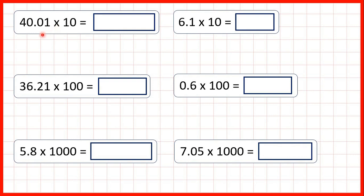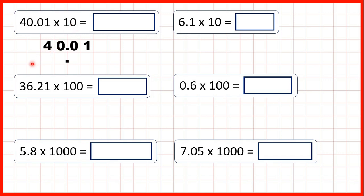Now we need to multiply decimals by 10, 100 or 1000 and to do that we always start in the same way. We write out our decimal, so here we have 40.01, and then we copy down the decimal point so that it's directly below the decimal point in our number. Now when we multiply, digits move to the left, and we're multiplying by 10 which has one zero, so digits move 1 square to the left.